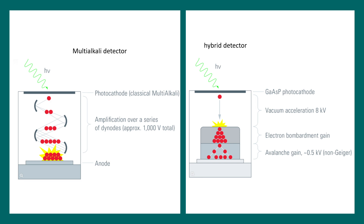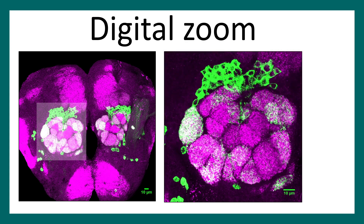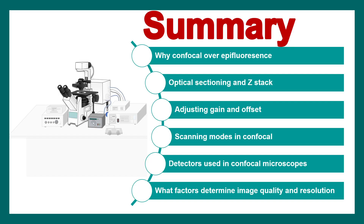Another feature of confocal is digital zoom: in addition to the magnification provided by the objective lens, one can focus on a small region of interest and digitally zoom in, improving image resolution. To summarize: we learned why confocal is better than epifluorescence microscopy, what optical sectioning and z-stacking are, how adjusting PMT gain and offset improves image quality, the scanning modes and detectors used, and what factors determine image quality.